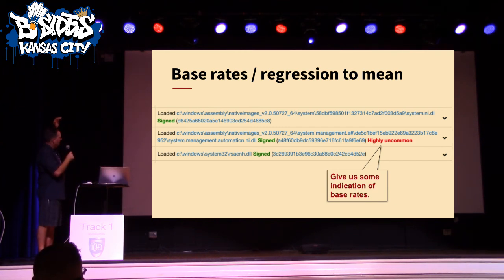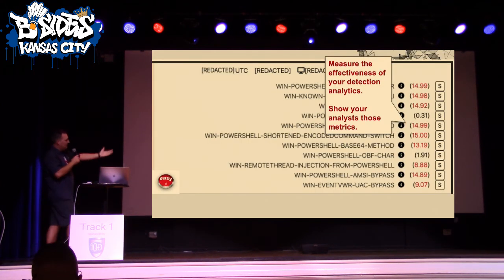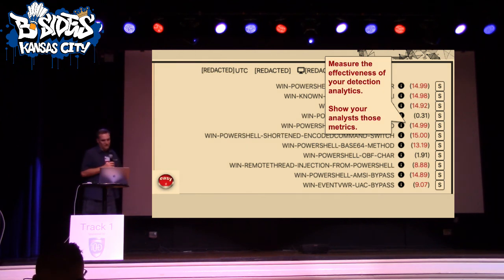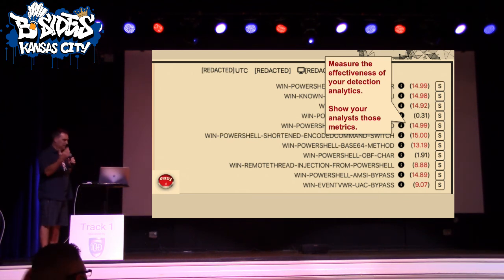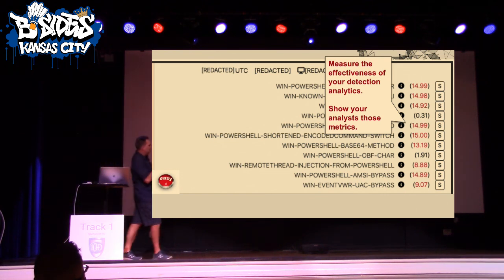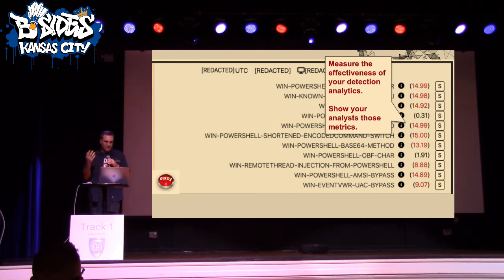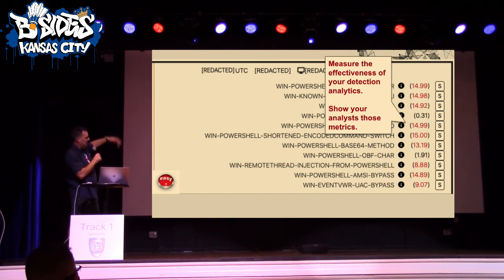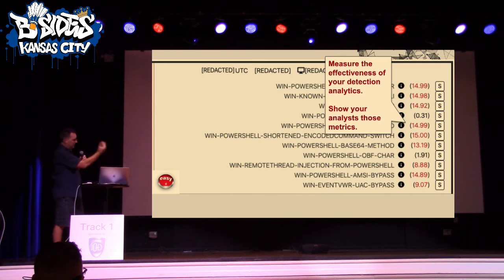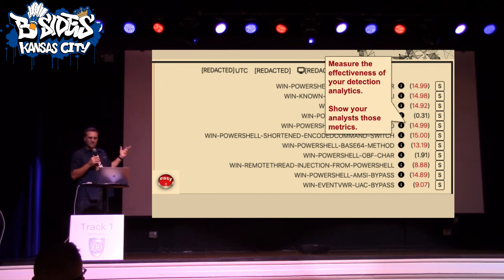Something I would love to see in these platforms: show me that it's highly uncommon for a given DLL to be loaded by this process. That's not something the platforms do today, and I wish they would. Here's an example of a screen a Red Canary engineer sees when looking at a process event. We've got several thousand detection analytics — basically signatures for bad behavior. Customer security telemetry goes into a big pipeline, we run several thousand detection analytics against it. In this case 11 of them triggered on a single process.